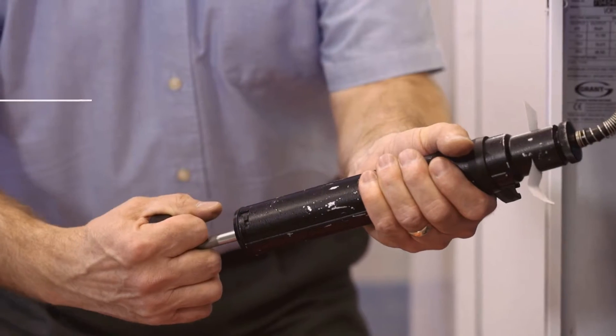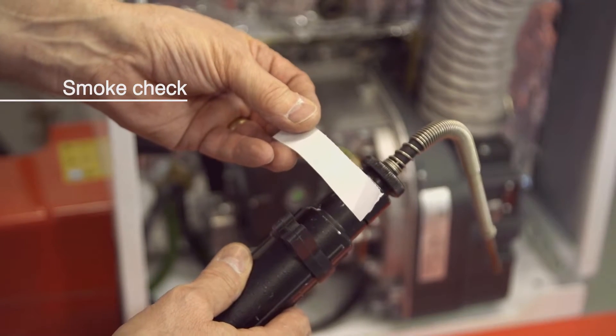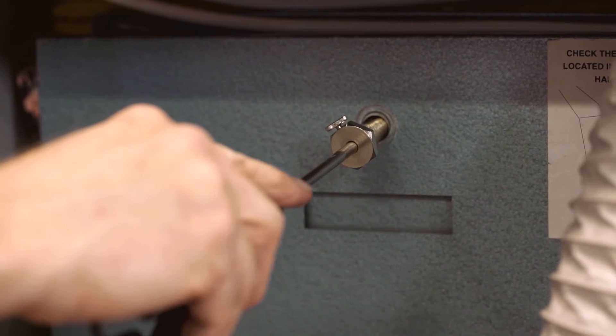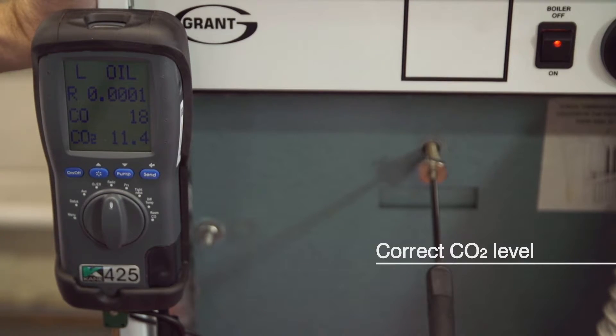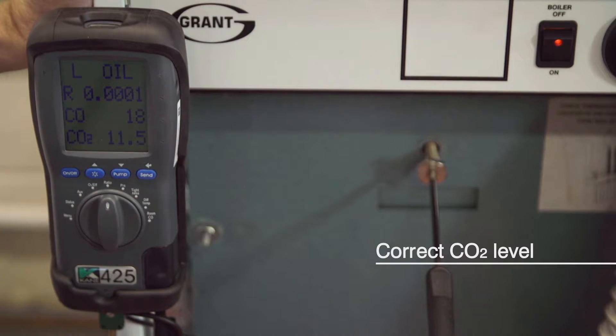Check the smoke with your smoke pump. If that's okay, put your combustion analyzer probe into the boiler or flue and check that the CO2 level in the flue gases is correct. If it's not as given in the installation instructions, you must adjust the air shutter to get the correct reading.